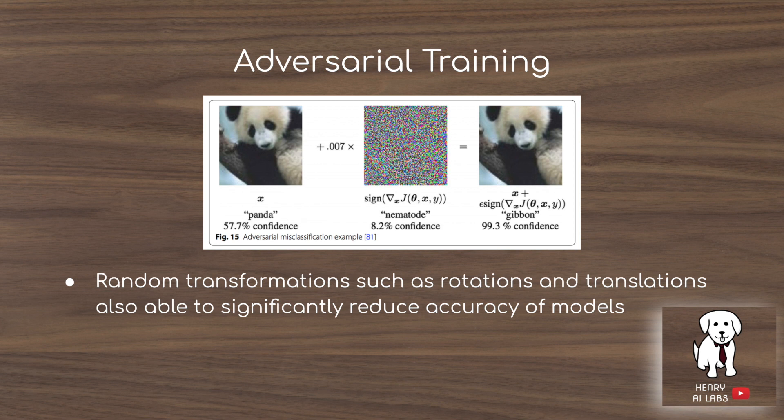Another interesting approach is adversarial training. An adversarial agent, constrained to a set of image manipulations like rotations and translations, tries to select geometric transformations that will result in a misclassification. It is beneficial to use these adversarial agents to direct the search process of augmentations.